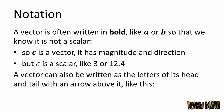A vector can also be written as the letters of its tail and head with an arrow above it. For example, this is vector AB, where A represents the tail and B represents the head. So vector A is equal to vector AB.